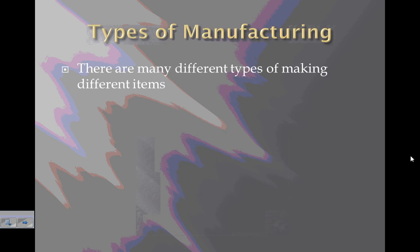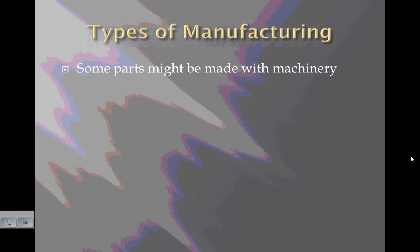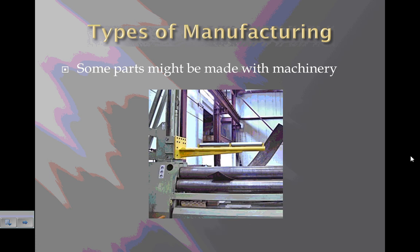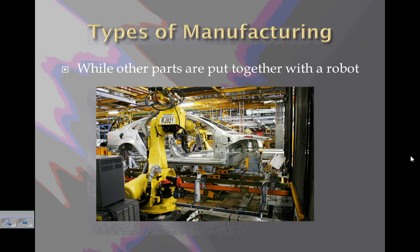There are many different types of making different items, and many items use multiple types of manufacturing for different parts. Some parts might be made with machinery — here's a picture of some metal being formed and bent into a different shape. While other parts are put together with a robot — here's a car being joined by robot welding, different pieces of a car being welded together.